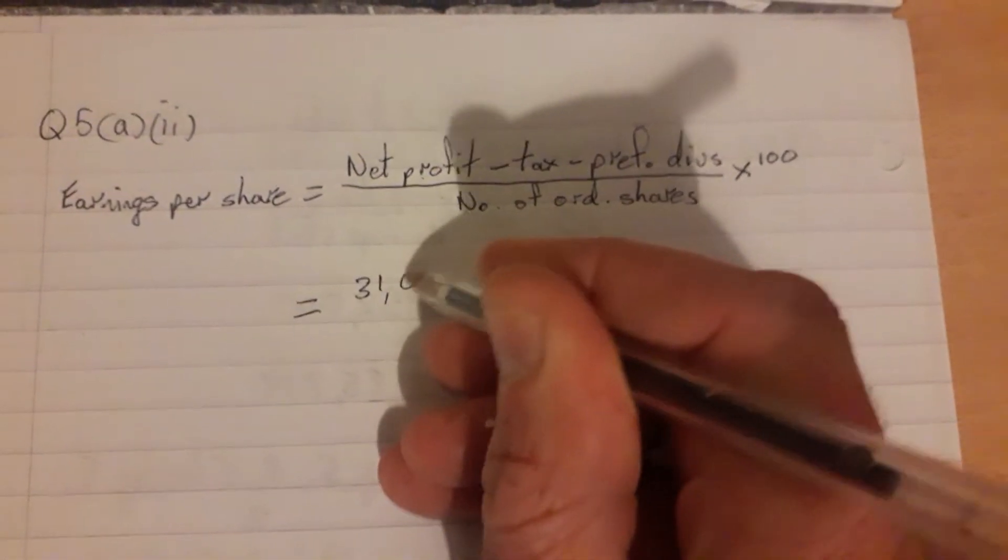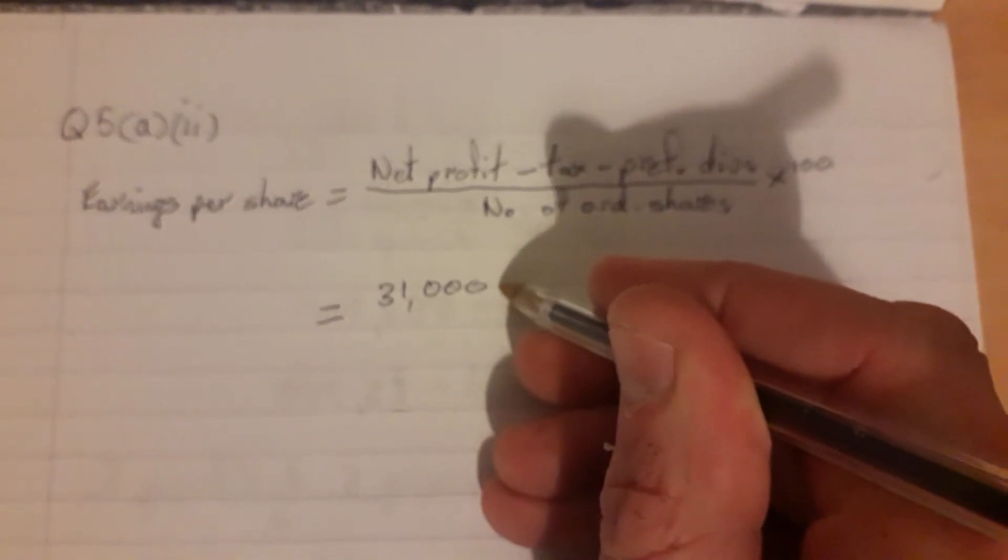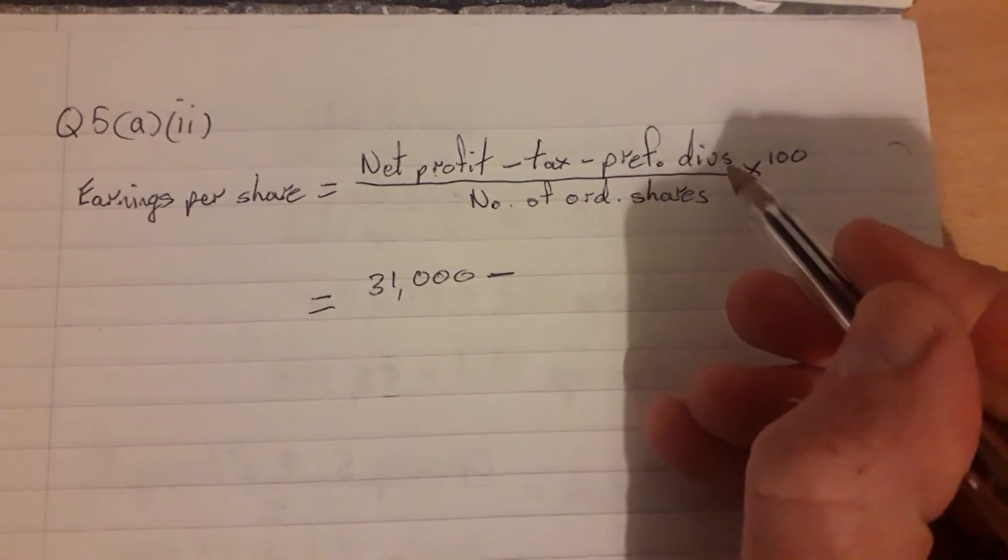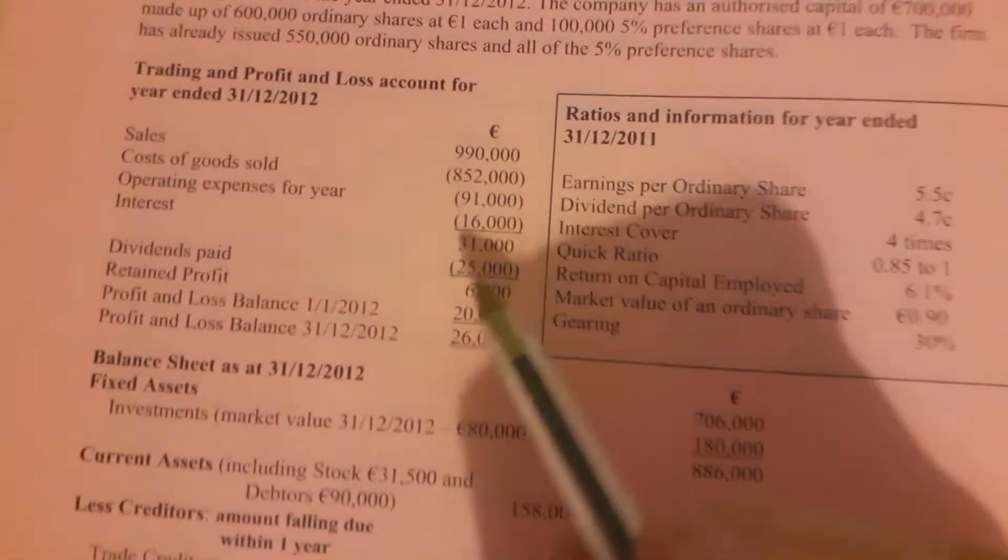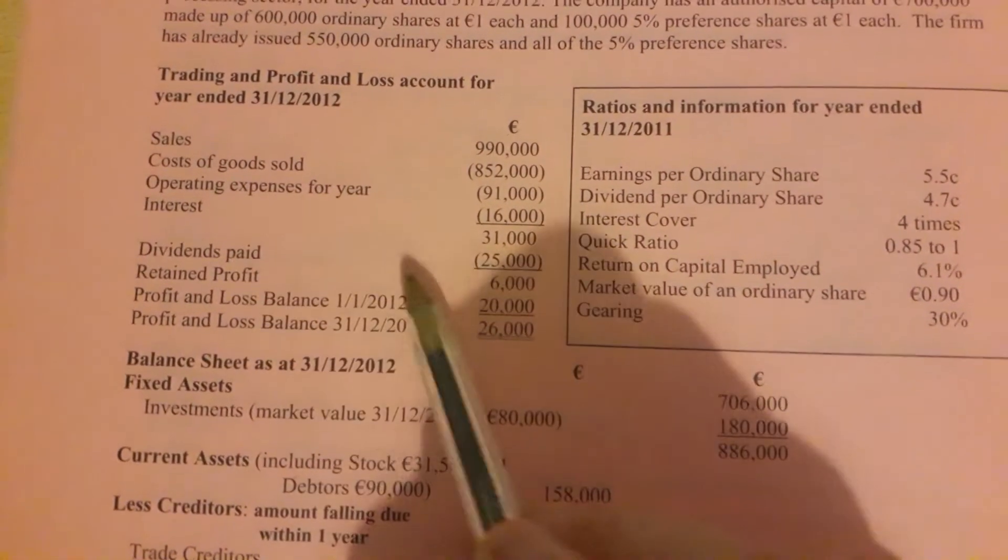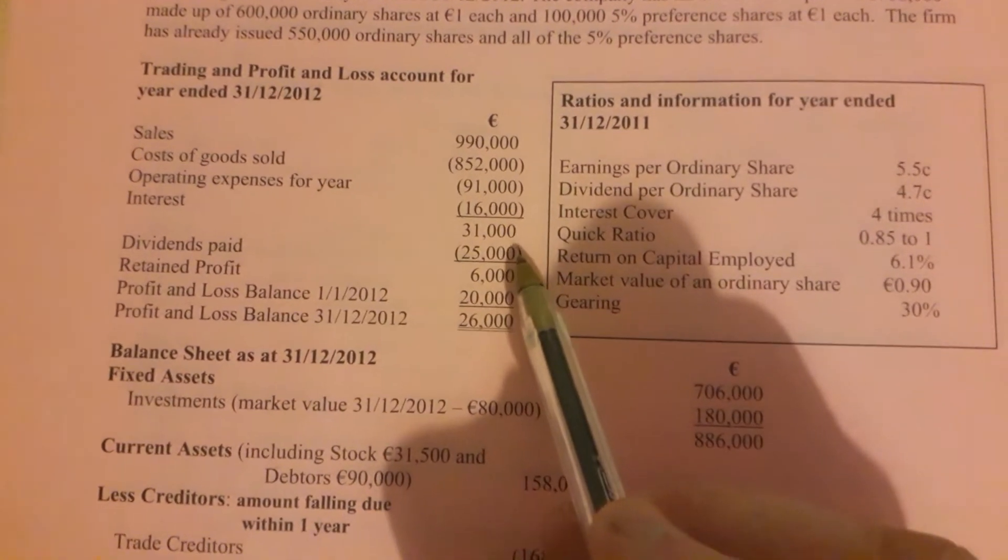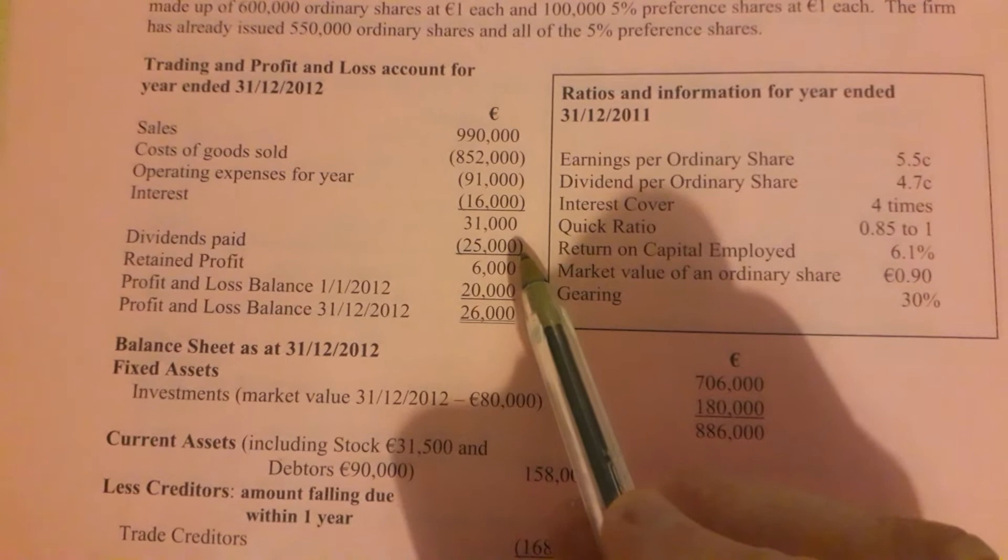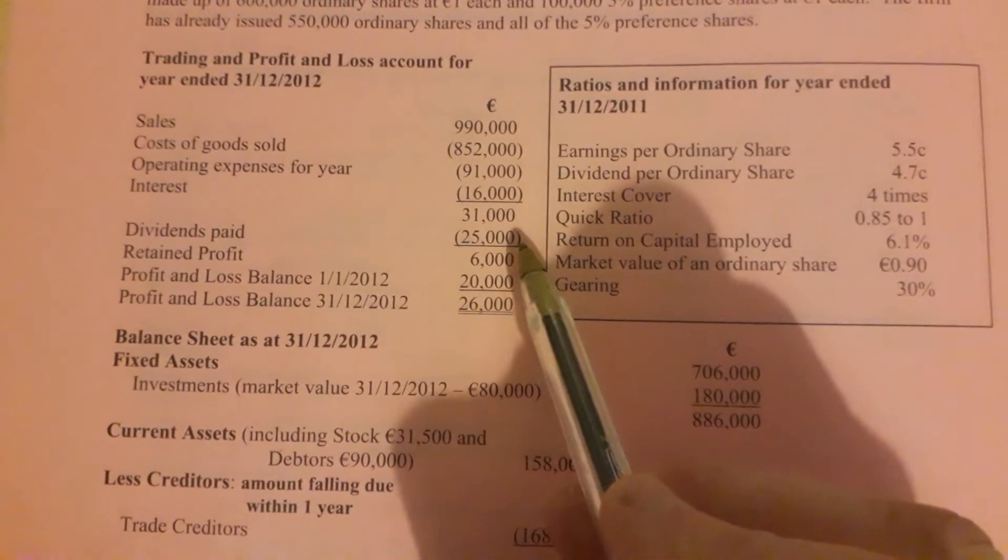So 31,000, and as I say there's no tax so we can ignore that for this particular question, minus the preference dividends. Here we've got a figure for the amount of dividends paid in total: 25,000. But that's both the preference dividends paid out and the ordinary dividends paid out all together.